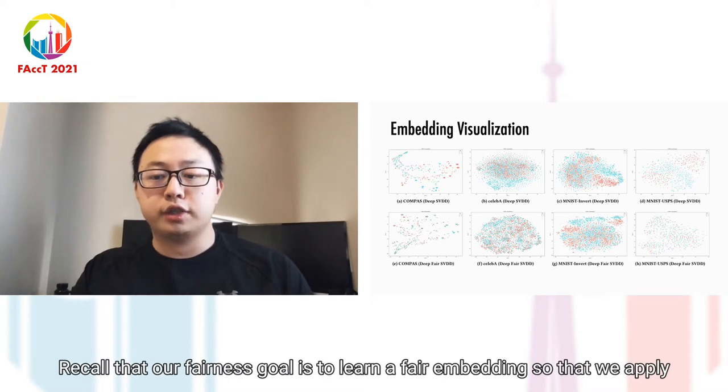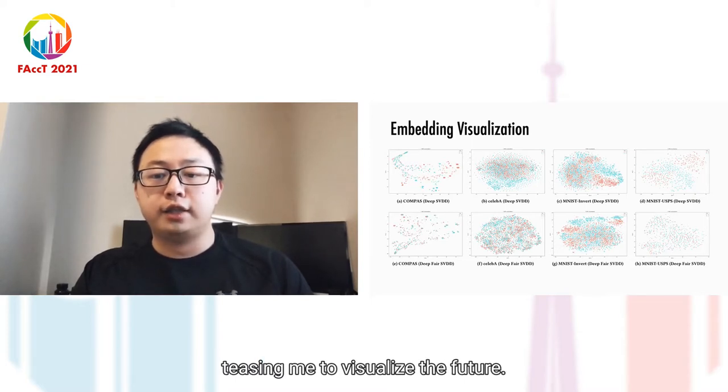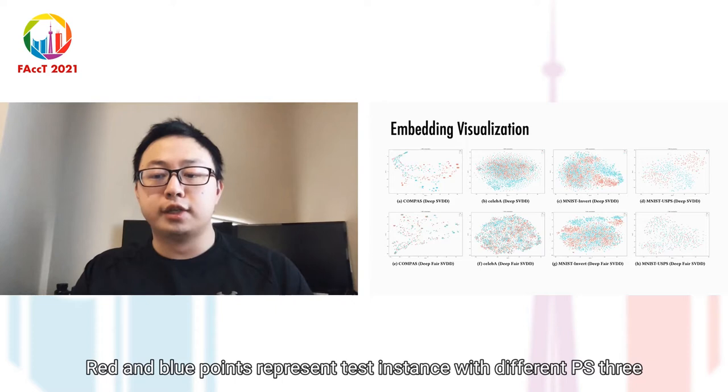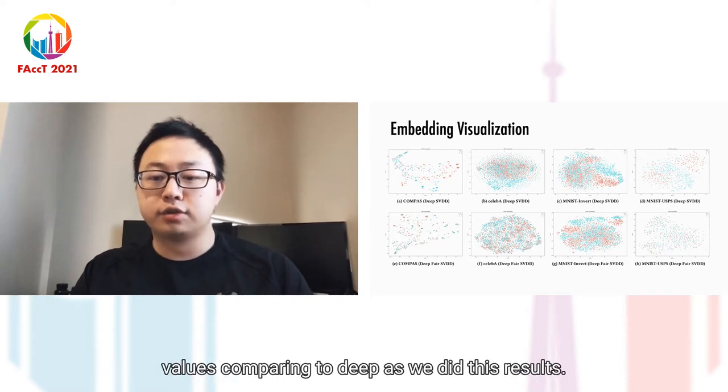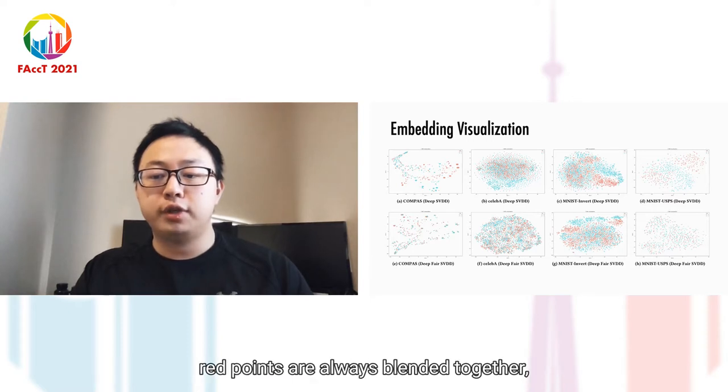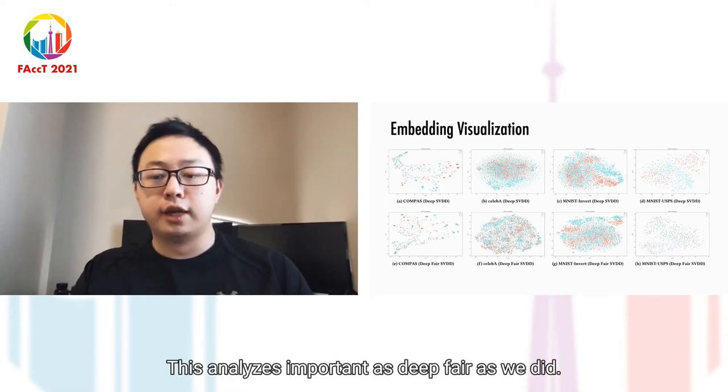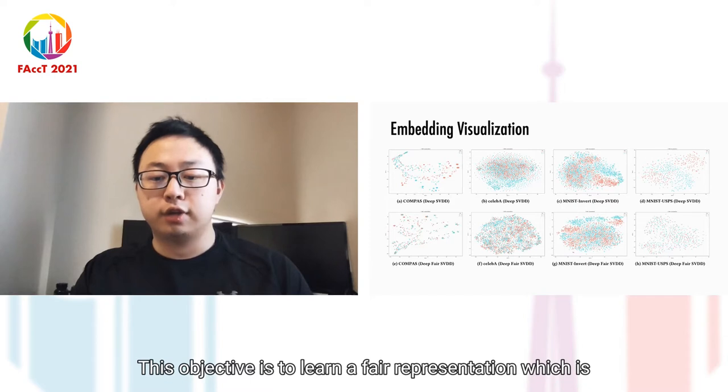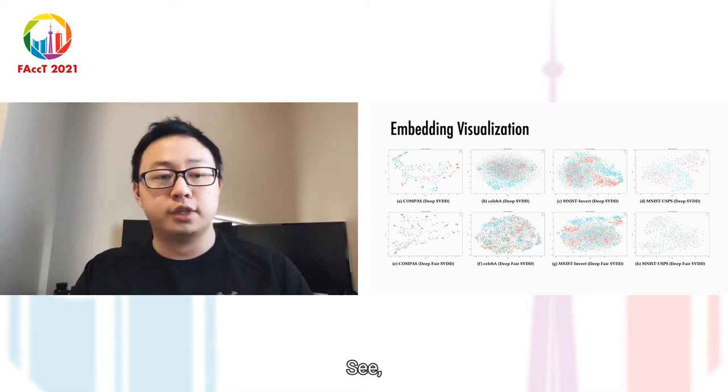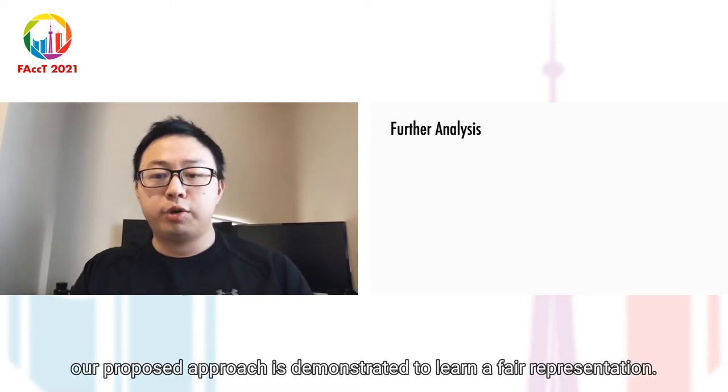Recall that our fairness goal is to learn a fair embedding, so we apply t-SNE to visualize the feature embeddings for test instances. Red and blue points represent test instances with different PSV values. Comparing to DeepSVDD's results, the DeepFair SVDD's learned embeddings are more fair as blue and red points are always blended together, which are hard to separate. This analysis is important as DeepFair SVDD's objective is to learn a fair representation which is statistically independent of the PSV variable Z. Our proposed approach is demonstrated to learn a fair representation.